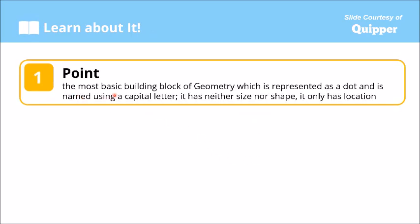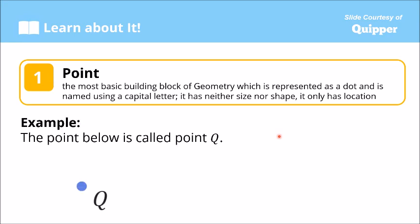The first undefined term is the point. The point is the most basic building block of geometry, which is represented as a dot and is named using a capital letter. It is neither size nor shape — it only has location. A point has no shape; we cannot say that a point is a circle because it has no shape. It only has location. Example: the point below is called Point Q, represented by a dot and named with the capital letter Q.